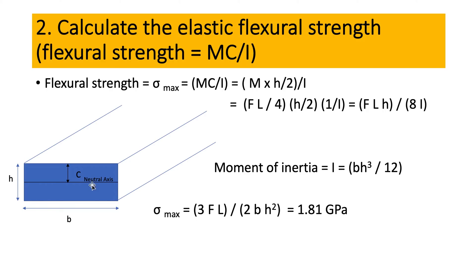The moment of inertia for a rectangular shape is given by this formula: I = bh³/12, where b is the width of the specimen and h is the thickness. You can find that from the textbook, and we can actually calculate it if you go back to your statics class.